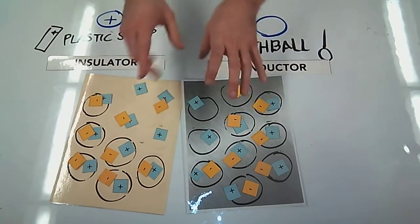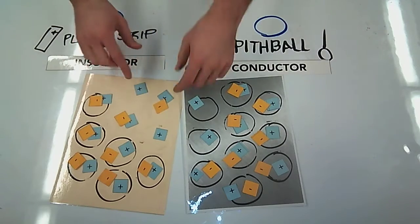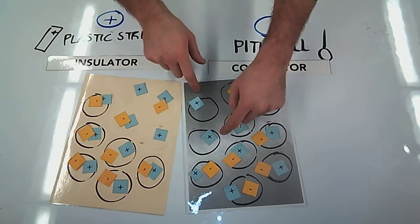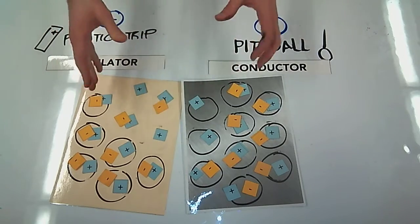Now electrons are going to jump over until there's essentially about an equal amount of exposed protons. Here I have two exposed protons, here I have two exposed protons. So electrons really don't want to move either way at this point.